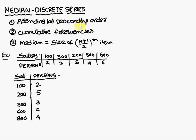First, ascending or descending order. This salary data, I am writing in ascending order: 100, 200, 300, 600, and 800. This you always have to remember. The salary you have to write in terms of the ascending order and the corresponding persons also you have to write. With 100, 2. 200 salary, 5. 300 salary, 3. 600, 6. 800, 4.